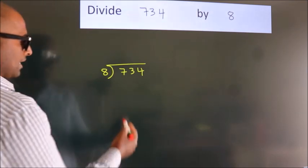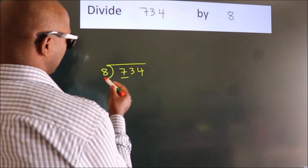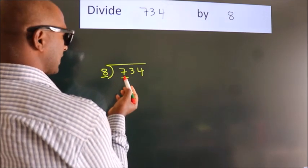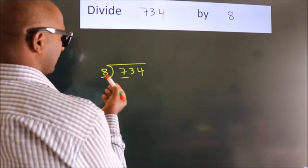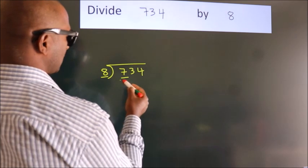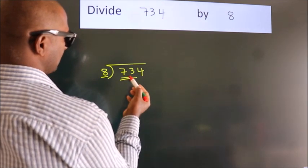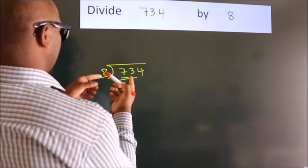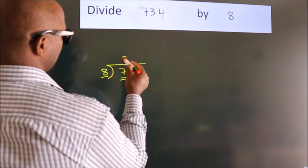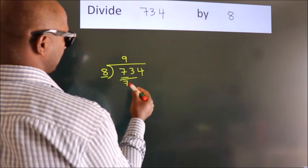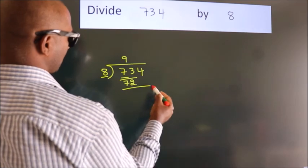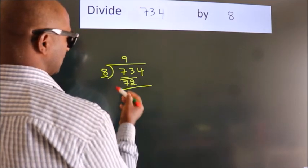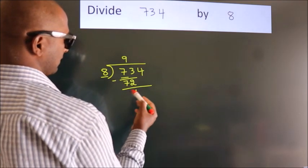Next. Here we have 7, here 8. 7 smaller than 8. So we should take two numbers, 73. A number close to 73 in 8 table is 8 nines, 72. Now we should subtract, we get 1.